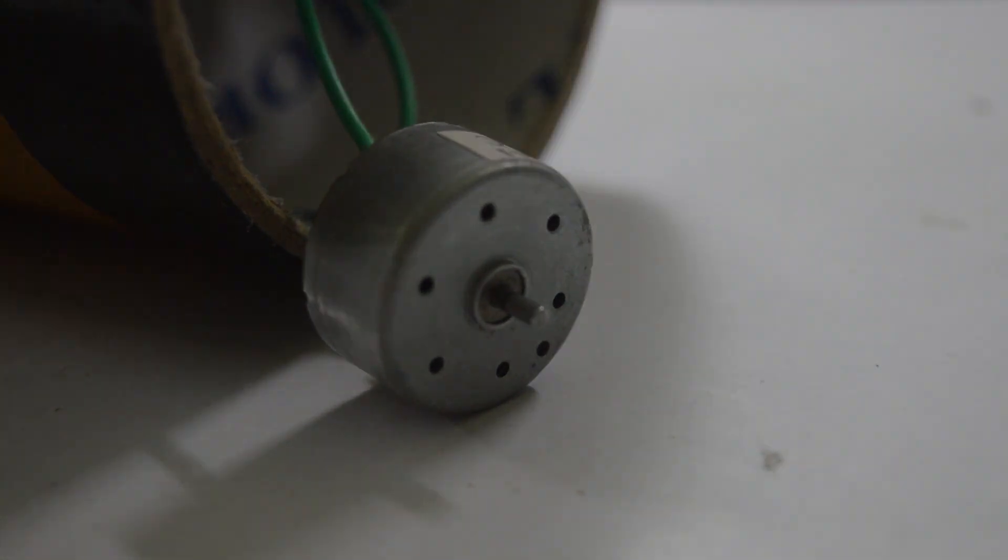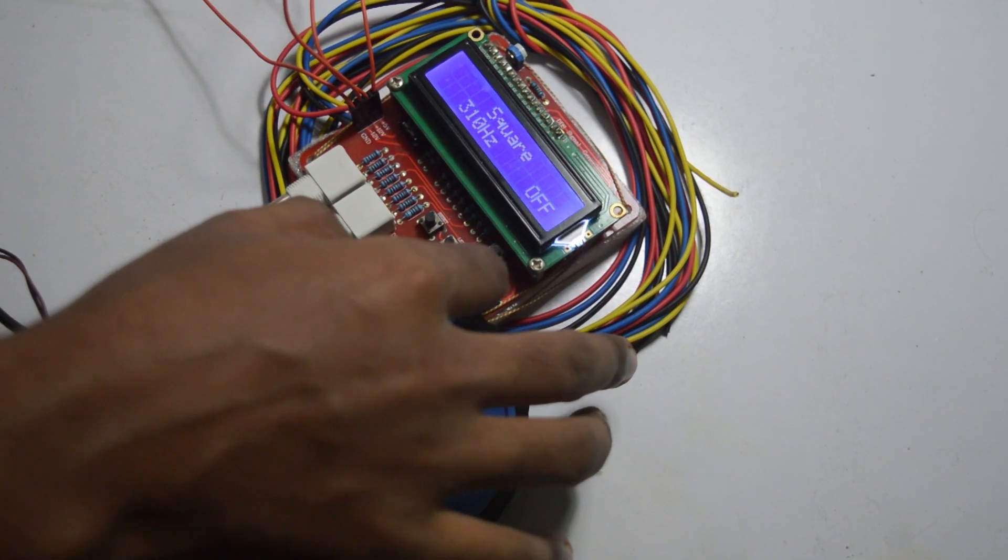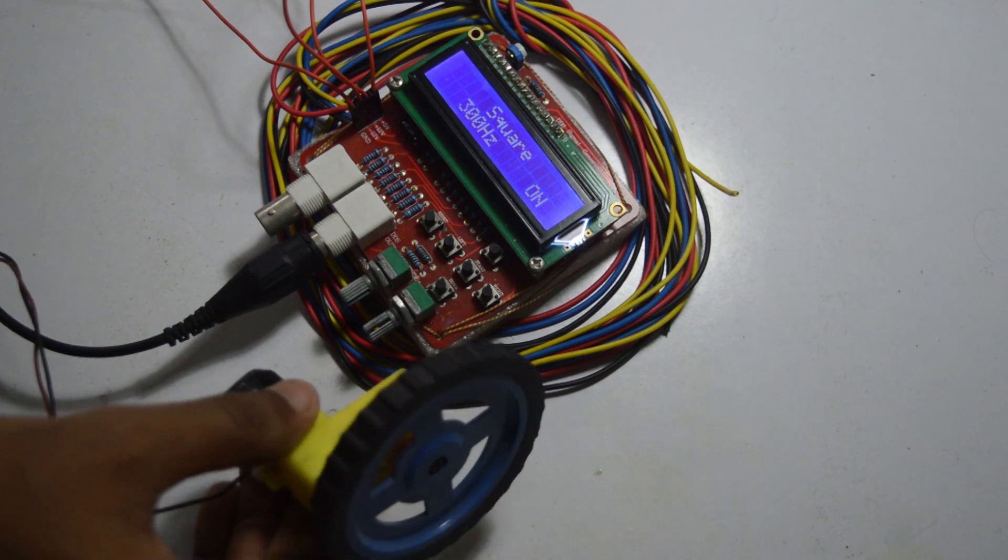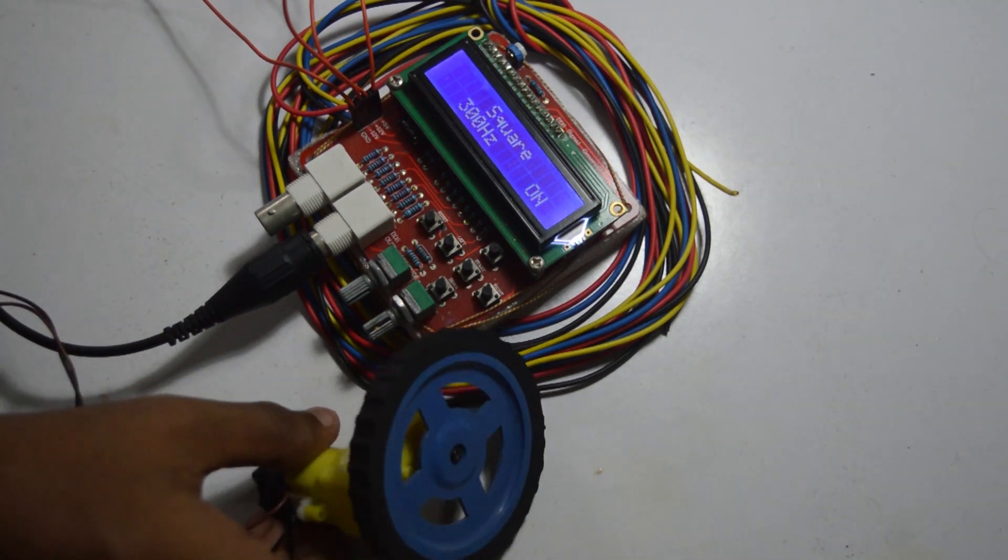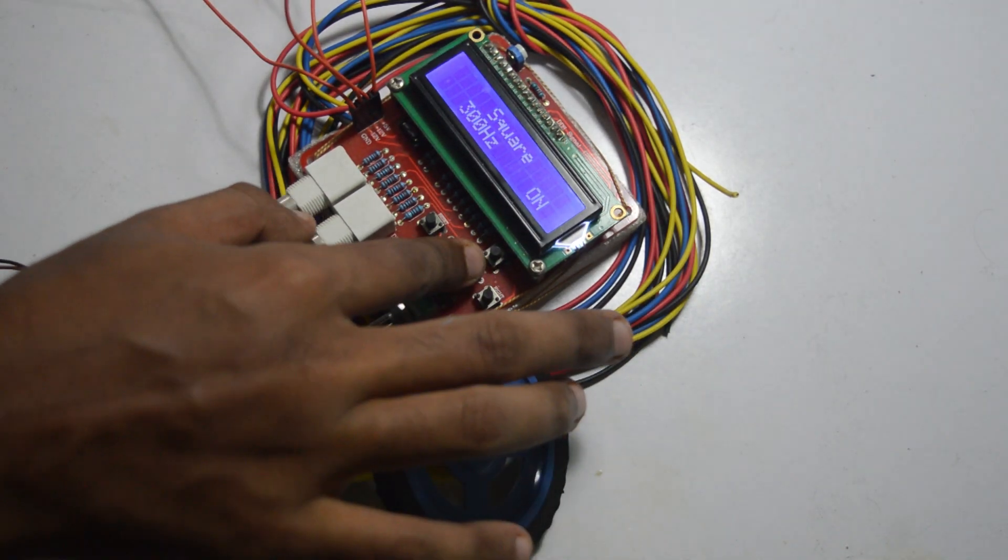I probed my function generator to the DC motor and applied a low frequency square wave with an amplitude of 10 volt peak to peak. Doing this, the motor started to hum but the humming sound is so low that my microphone is unable to pick it up.